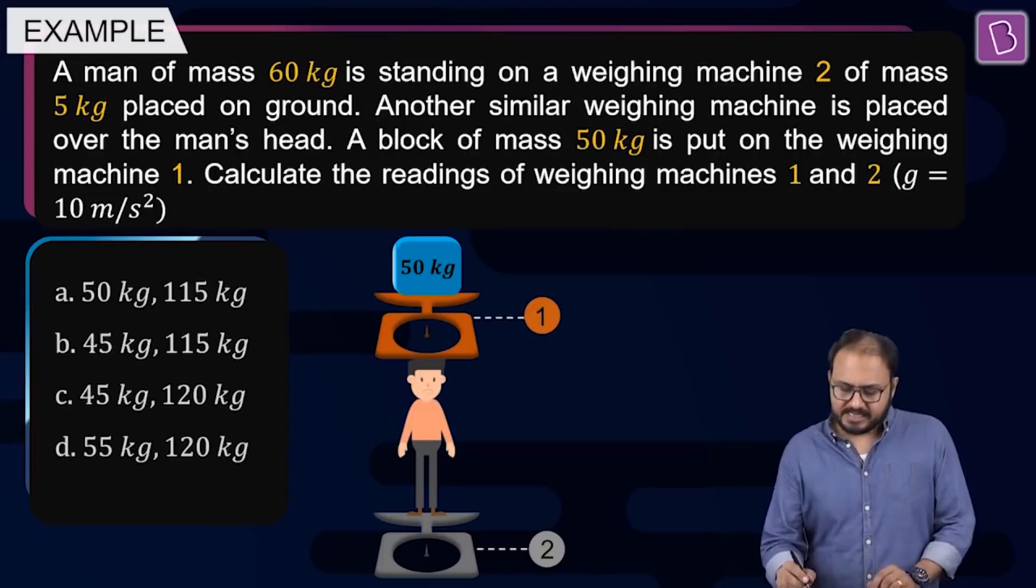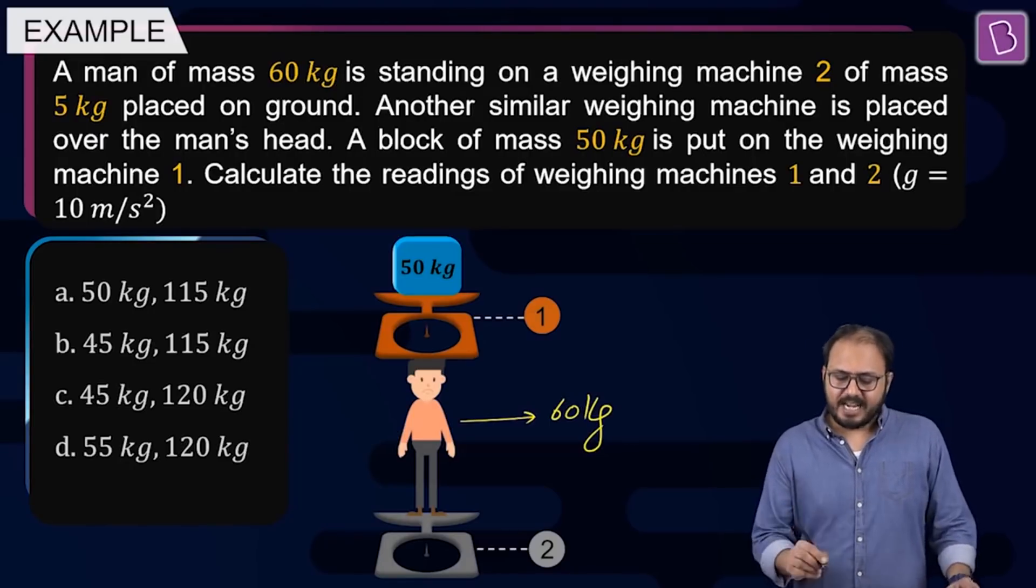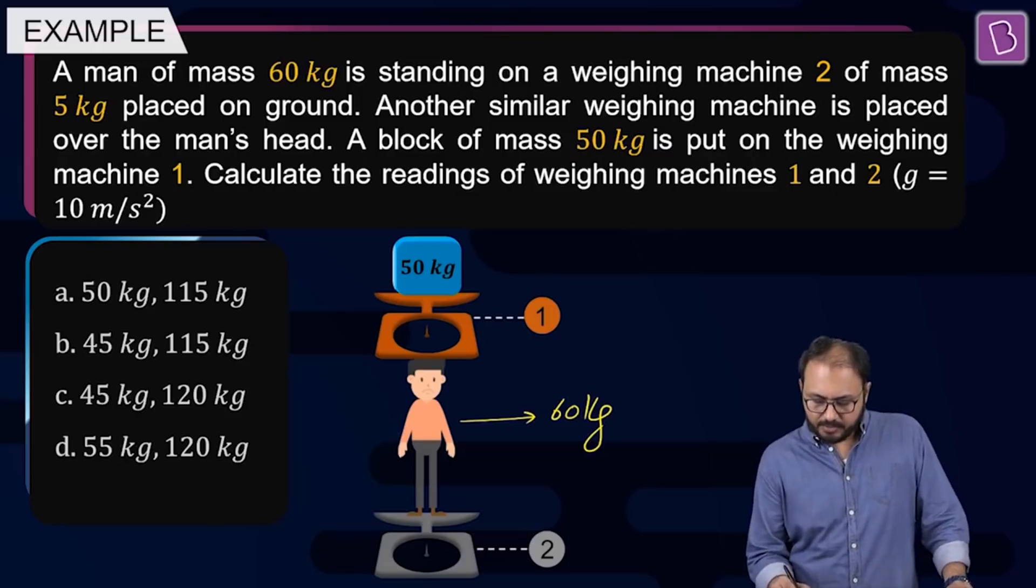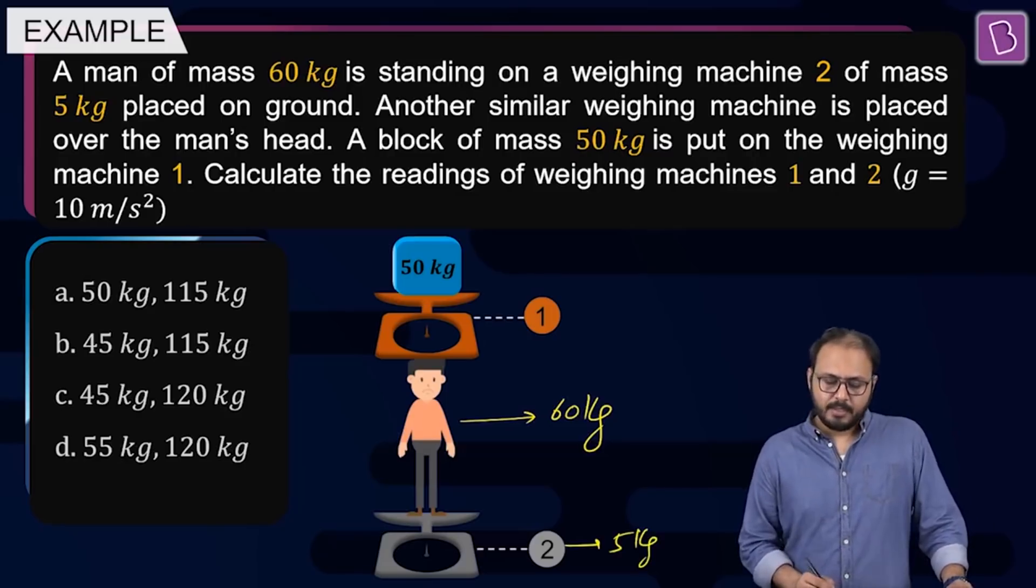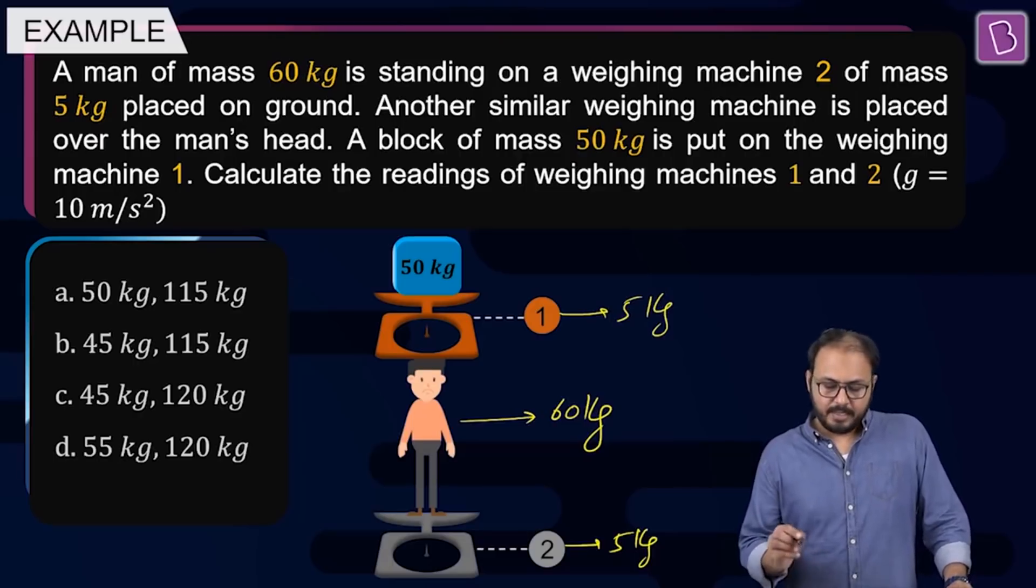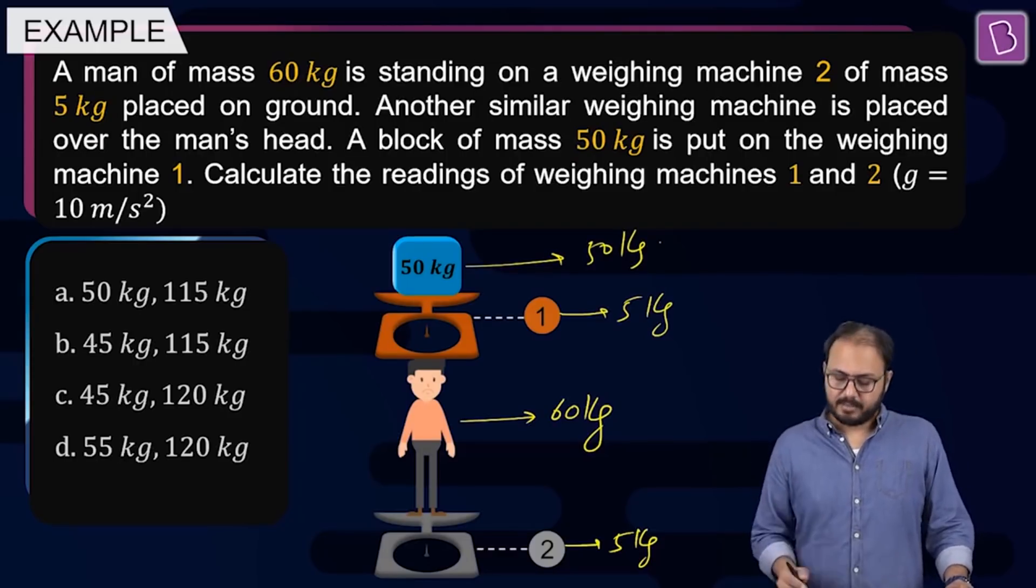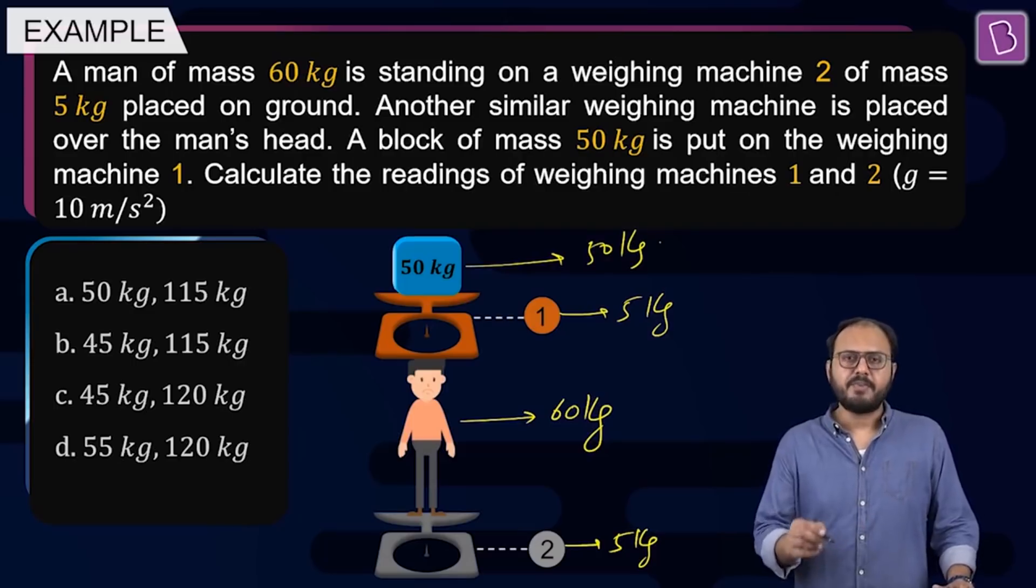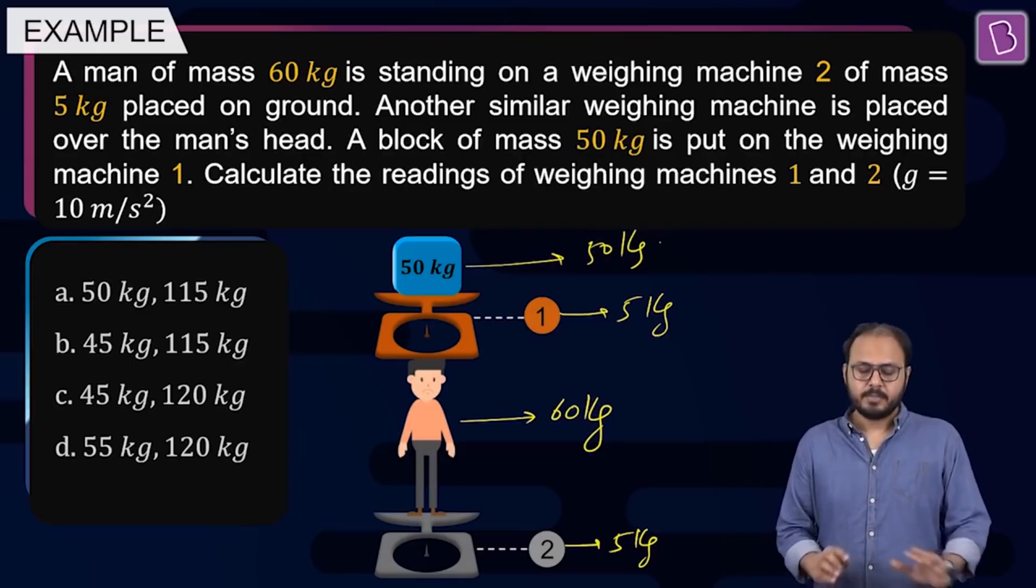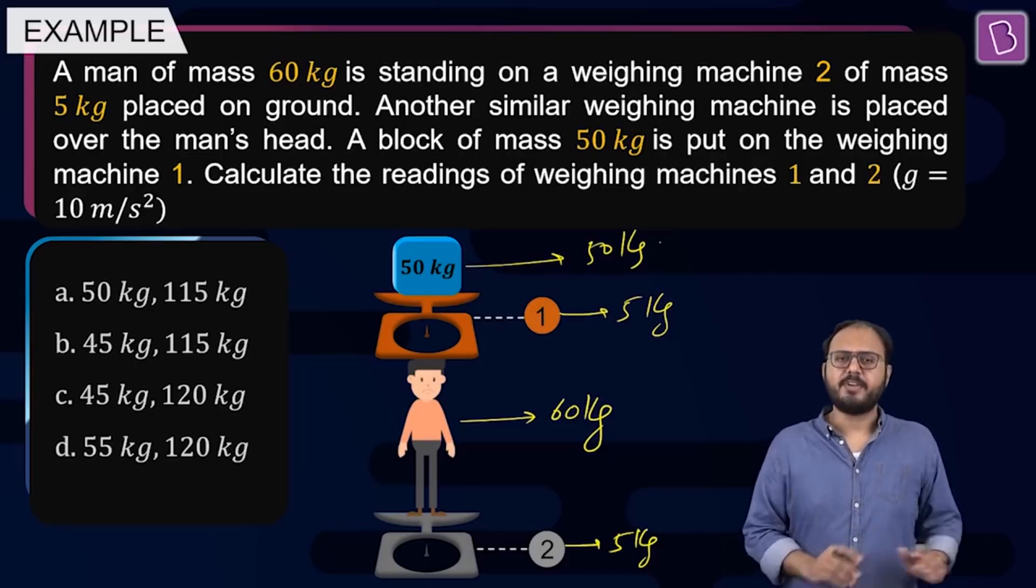Let me illustrate that with the help of an example. A man of mass 60 kg. So, this guy, mass is 60 kg. Is standing on a weighing machine too, of mass 5 kg. This is 5 kg. On the ground. Another similar weighing machine. What does similar mean? Similar means this weighing machine is also 5 kg. Of course, is placed and the 50 kg block, 50 kg block is kept. So, you have 4 masses kept one over the other. Lowermost 5, then 60, then 5, and then 50. Take your time. A block of mass 50 kg is put on the weighing machine 1. Calculate the reading of both the weighing machines.